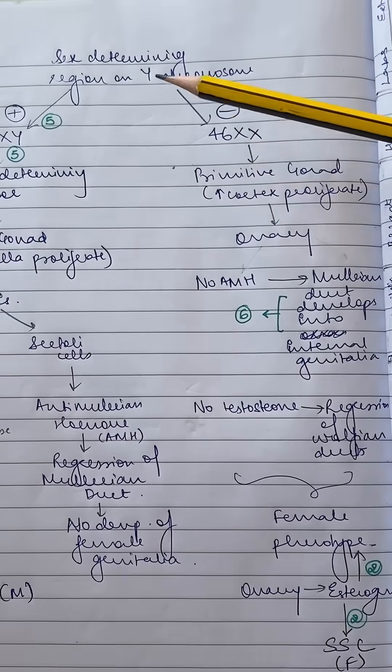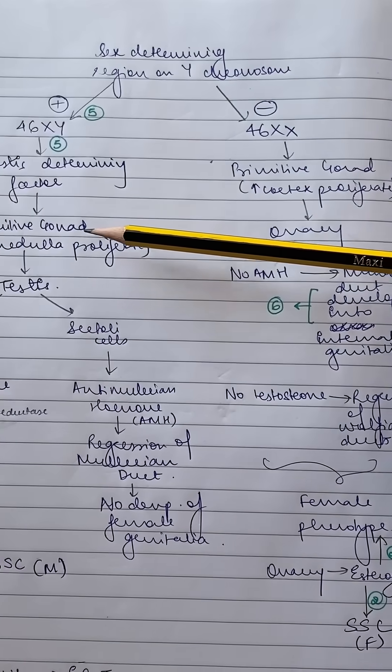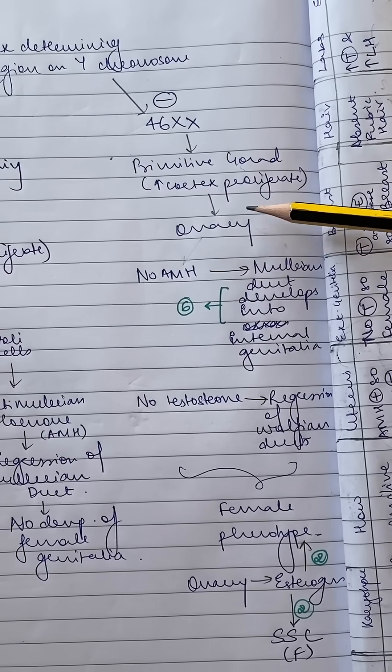Now if you are female, you do not have the SRY gene. So your primitive gonad will not differentiate into testis. Instead, the cortex is going to proliferate and form ovaries.